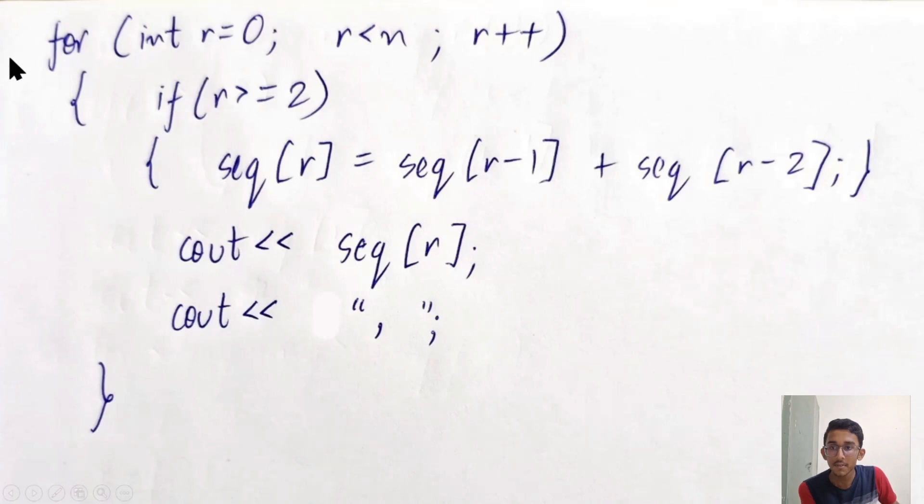So I've created a for loop here, initializing with integer r equal to 0, condition r less than n, and incrementing by 1 over each loop. Now, you may ask why I have used integer r equal to 0 here. That is because I have to output all the terms. But this formula is not applicable for r equal to 0 and r equal to 1.